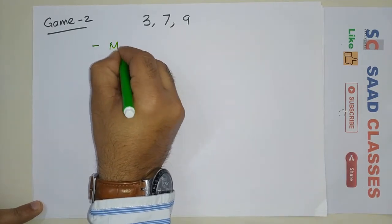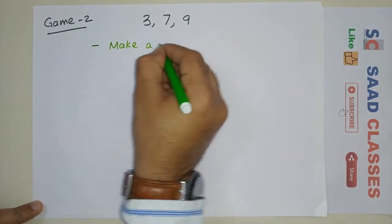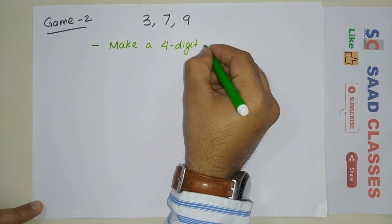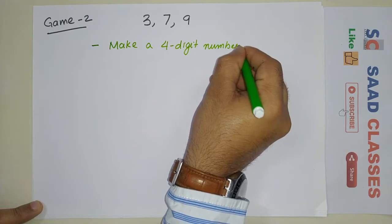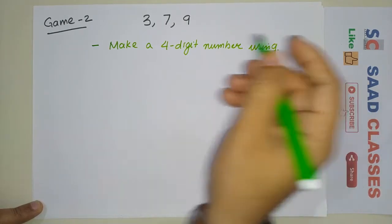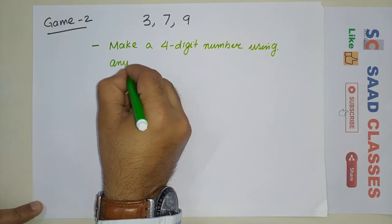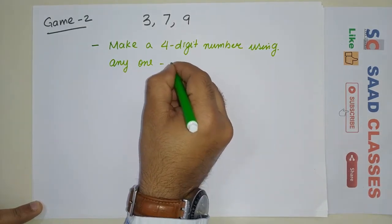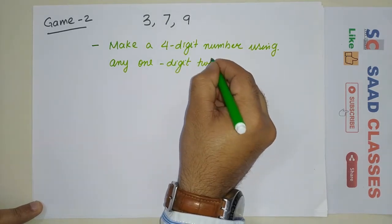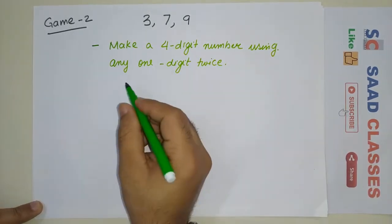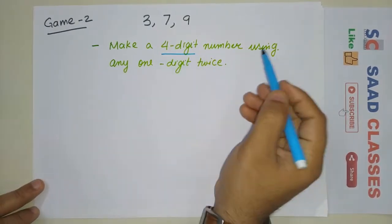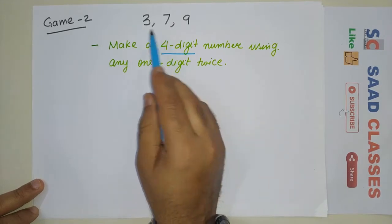Rule number one: Make a four-digit number using any one digit twice. So this is the rule - you have to make a four-digit number and you can use one digit in these three digits twice.